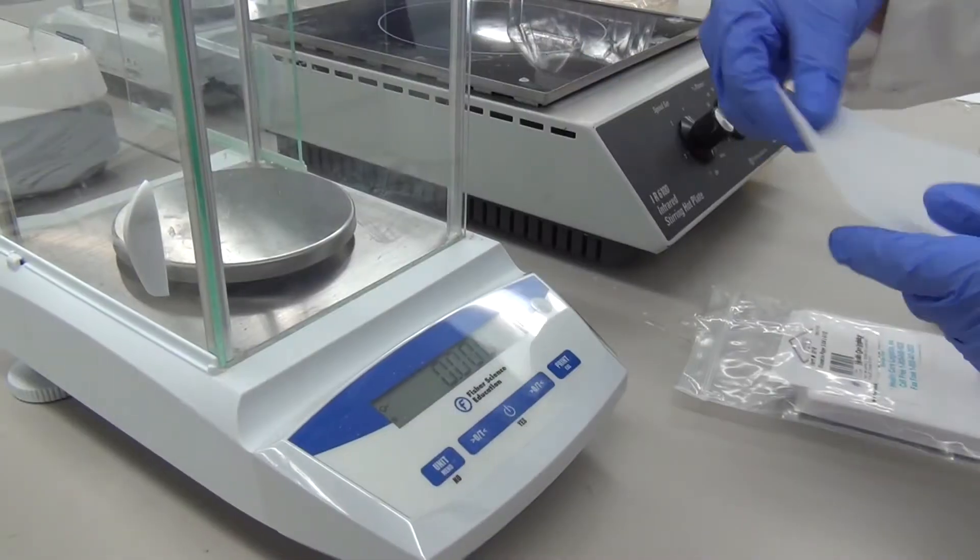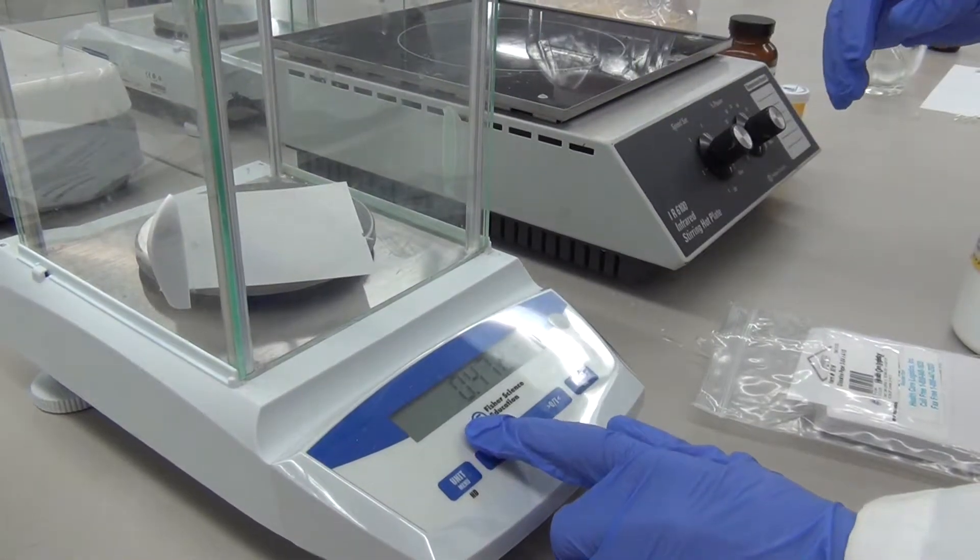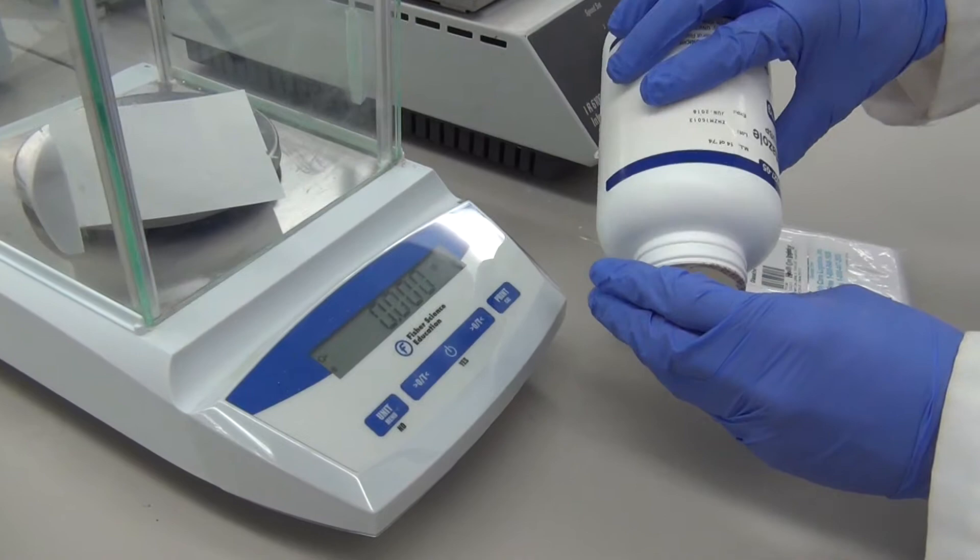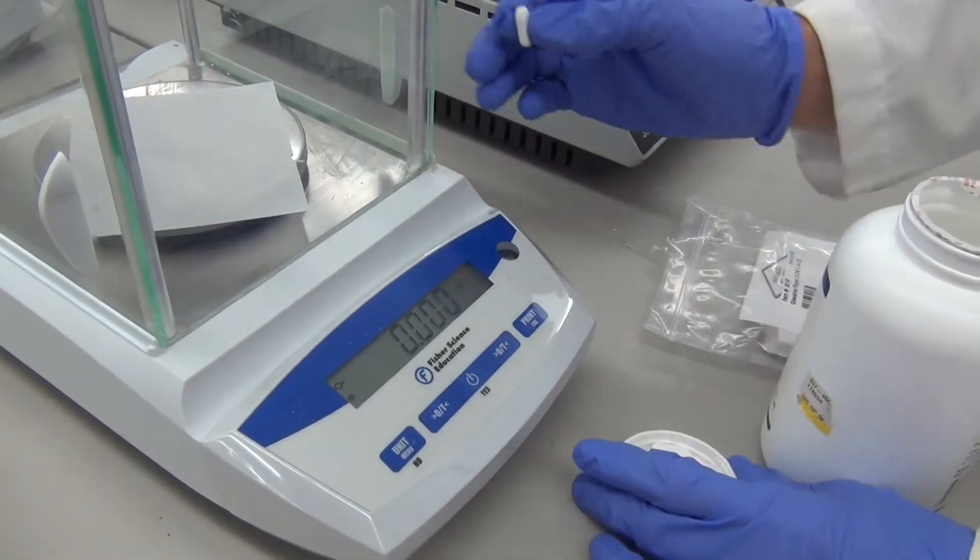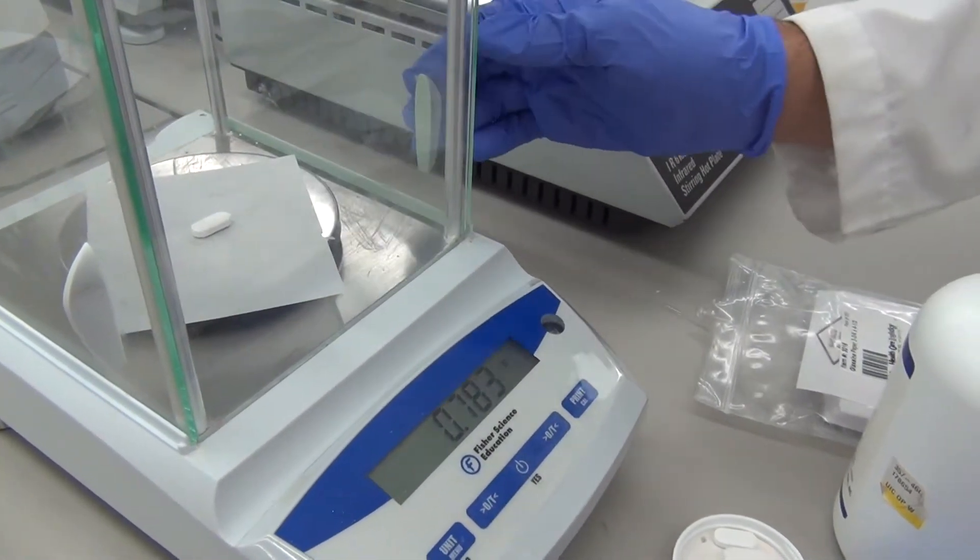Step four is weighing out the drug. For this video, the drug we are using comes in a tablet formulation. We are first going to take the weight of a single tablet. We can then calculate how many tablets we need to crush in order to get the amount of drug required by the prescription.